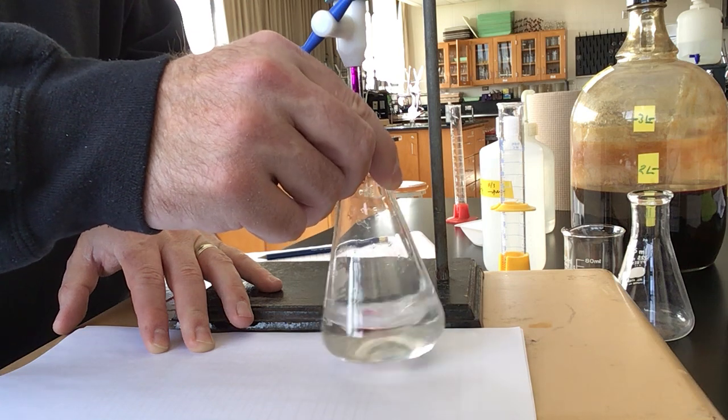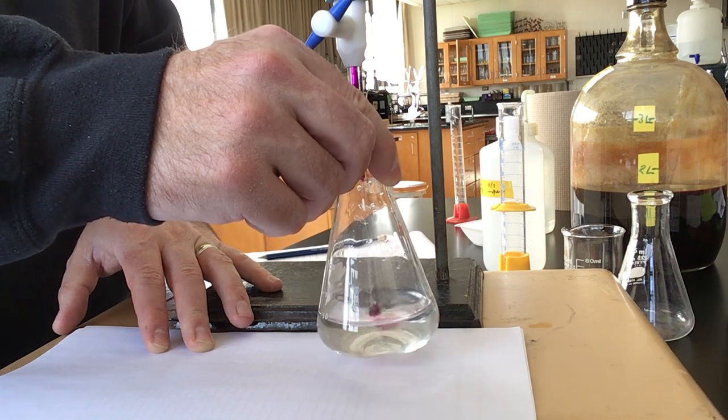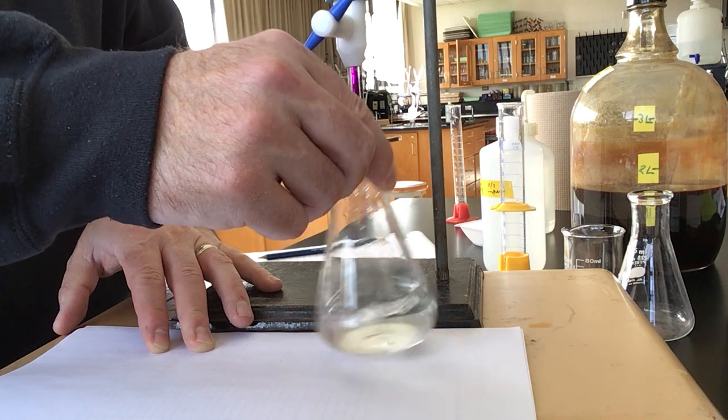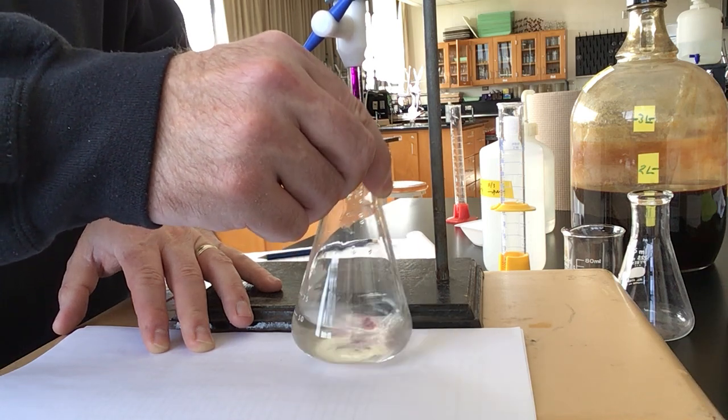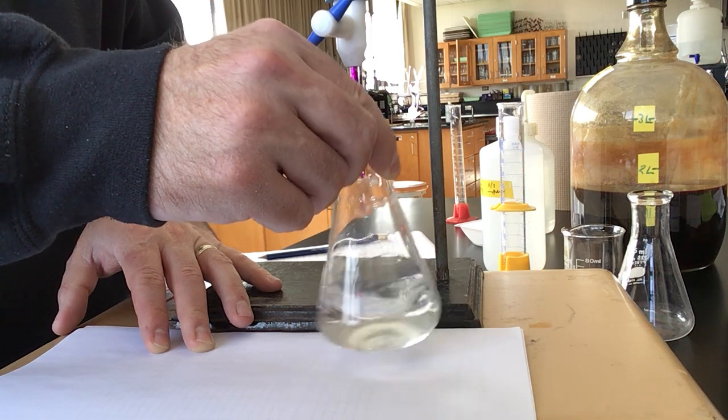So I've got this going at a couple of drips per second. You can kind of see that the potassium permanganate lingers for a little bit, and then as we mix it, it goes away.